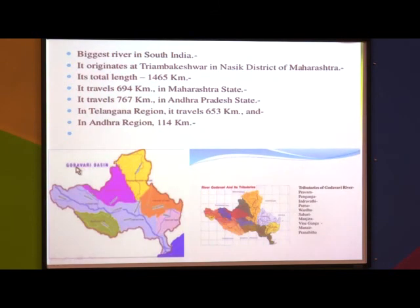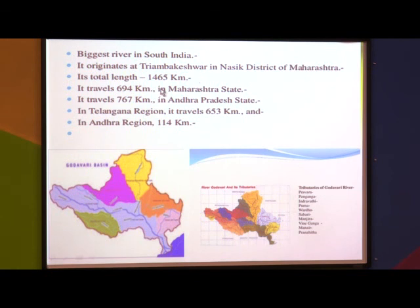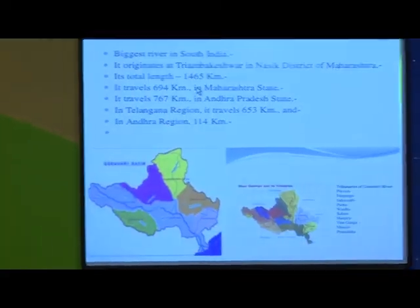The Godavari is the biggest river of South India with a total length of approximately 1400 km from Trambakeshwar, Nashik to the Bay of Bengal. In Maharashtra it flows 694 km, in Andhra Pradesh 767 km, and through Telangana and Andhra Pradesh approximately 653 and 114 km respectively. Because of its length and the area it covers, it is also known as Dakshin Ganga. The remaining rivers will be discussed in the next lecture. Thank you.